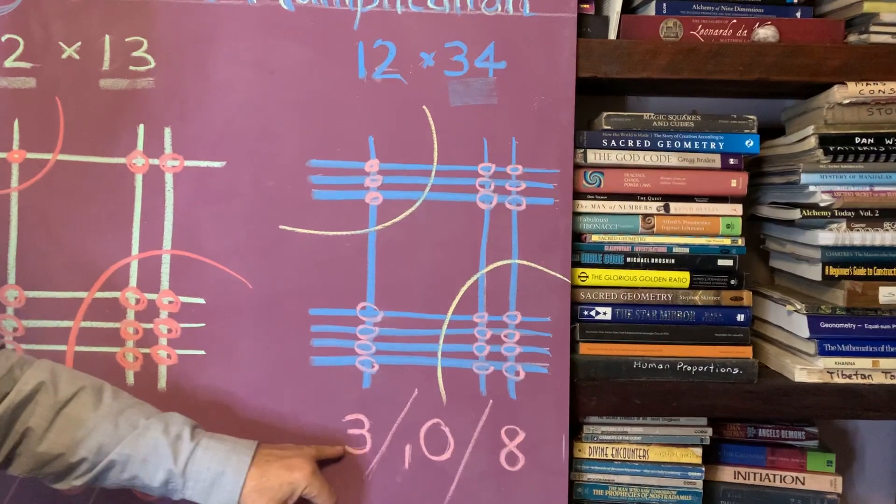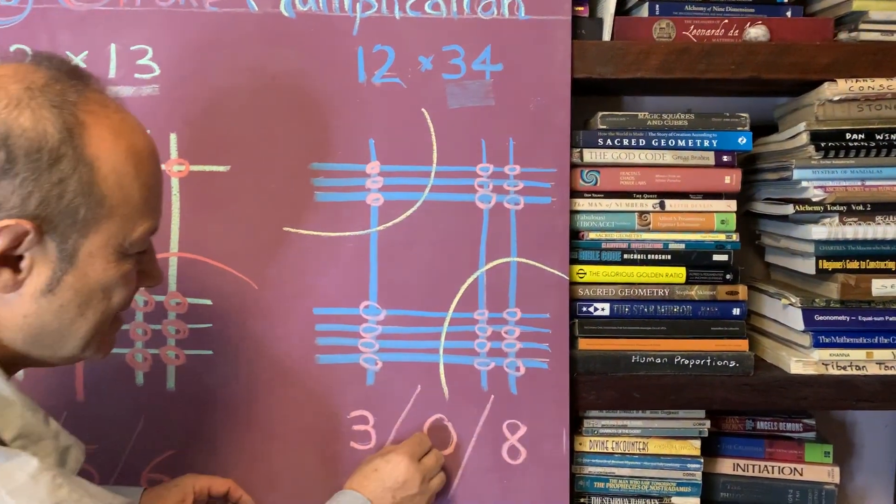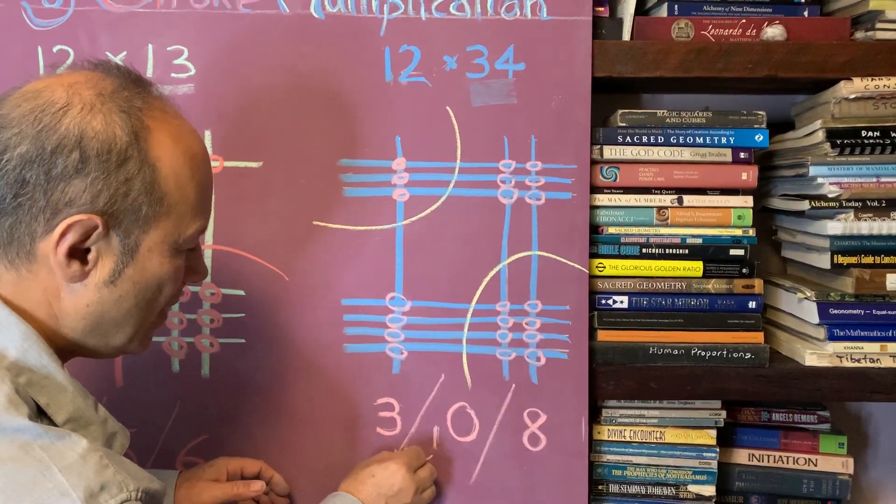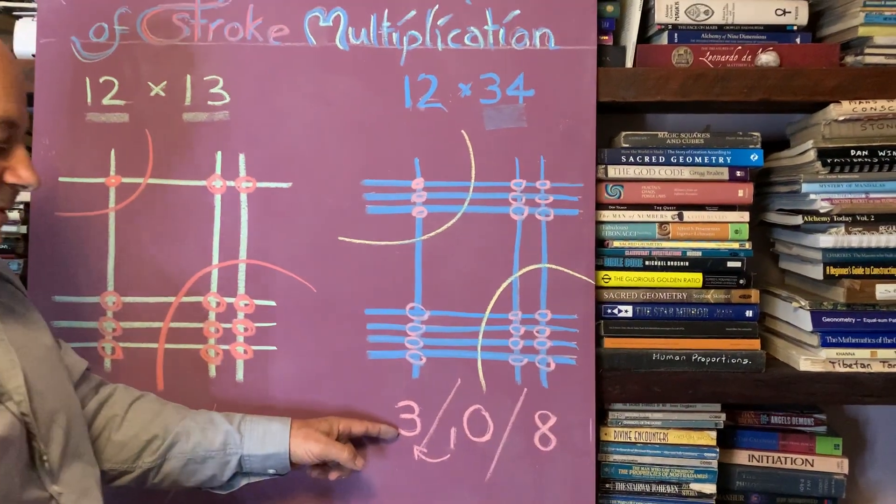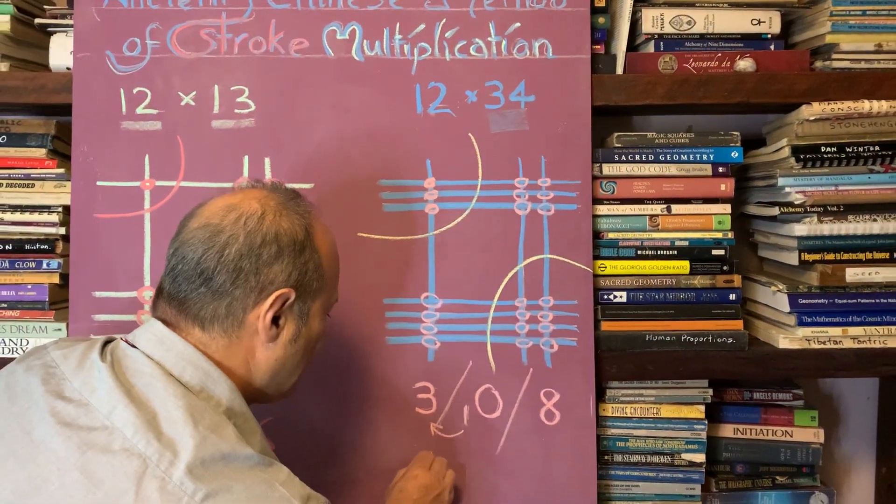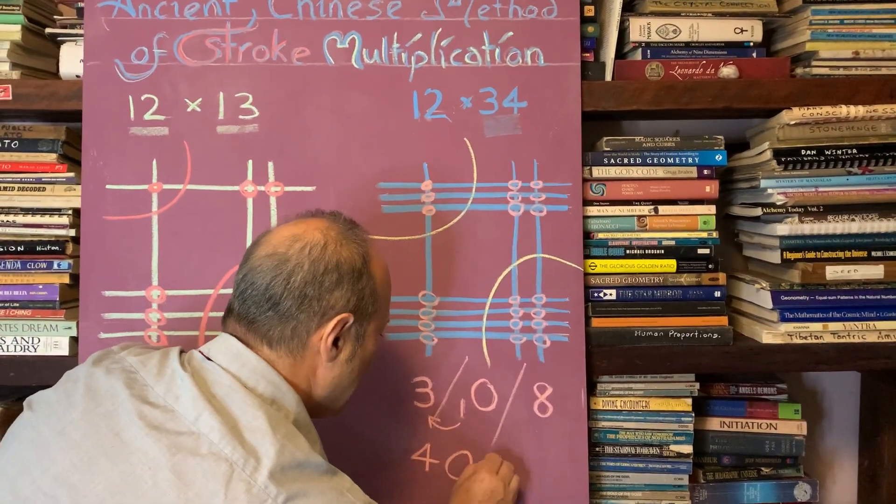But the answer is not 3, 10, 8. We need to bring this carry over, this one, and carry over it to the left. So the answer becomes 408.